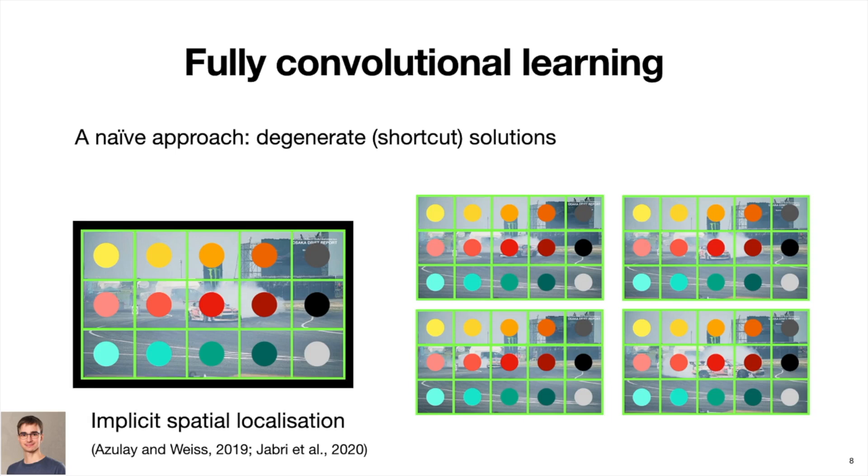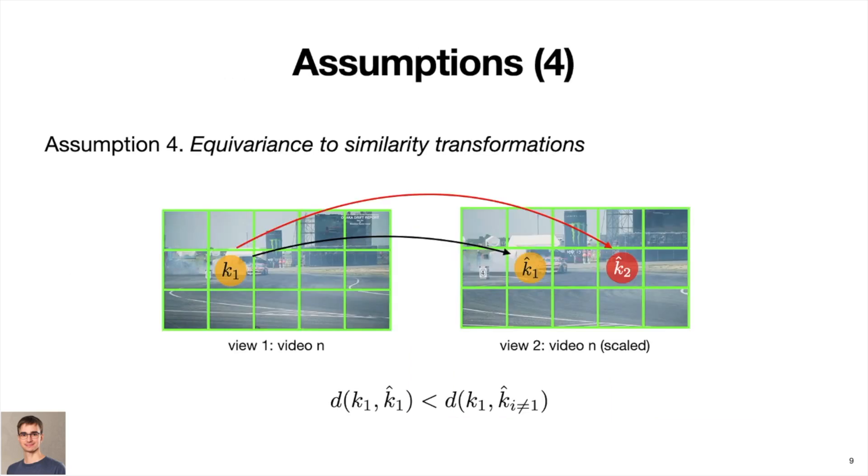In this work, we make another assumption that allows us to avoid such trivial solutions. We assume that the features should be equivariant to similarity transformations, such as flipping and scaling. This assumption is valid for the task of video object segmentation, on which we focus in this work.